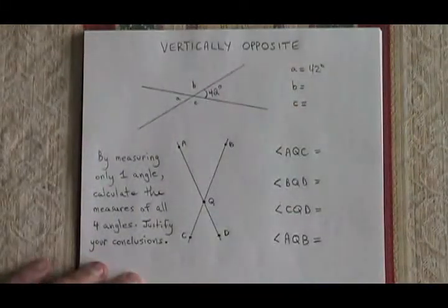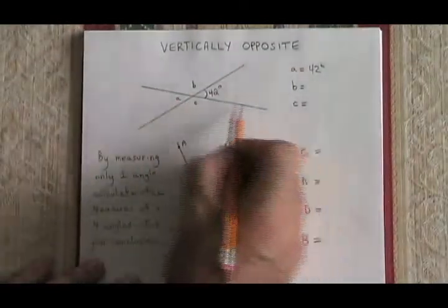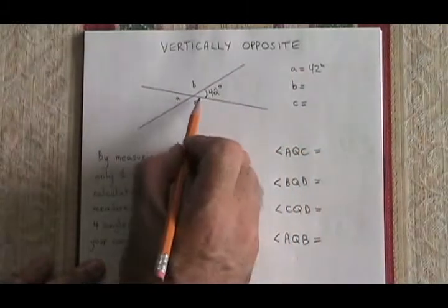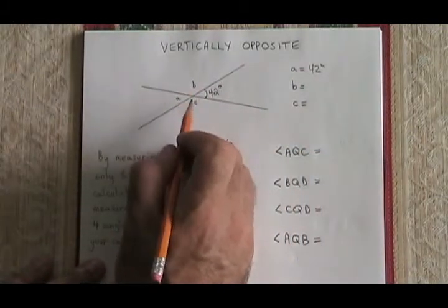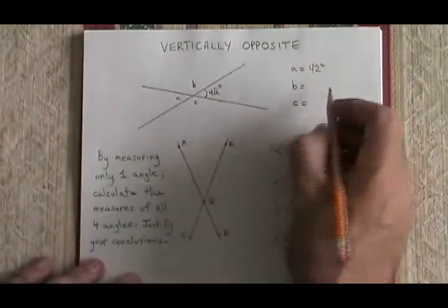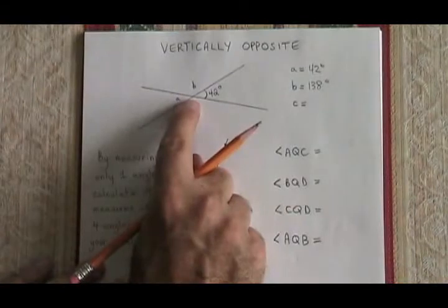Remembering the rule supplementary, this straight line is 180 degree angle. So if we do 180 minus 42, we can calculate the measure of angle B. 180 minus 42 is 138 degrees. So angle B is 138 degrees.